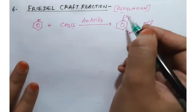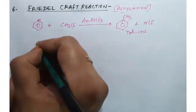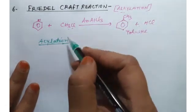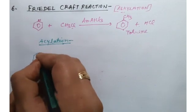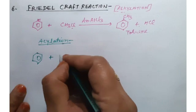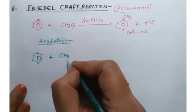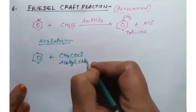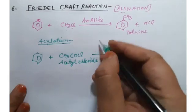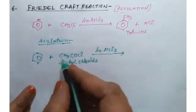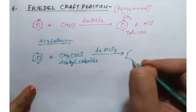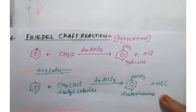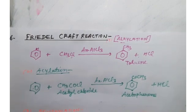The other Friedel-Crafts reaction is acylation — not alkylation. In acylation, benzene reacts with acetyl chloride (CH3COCl) in presence of anhydrous AlCl3. The product formed is a ring with COCH3, which is acetophenone, and HCl is removed out.